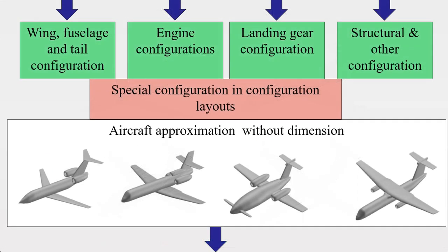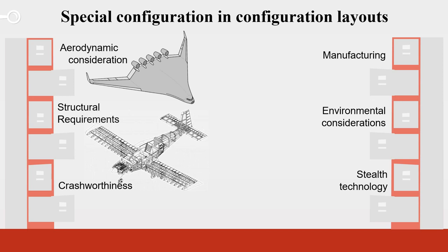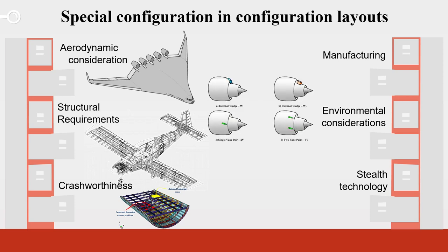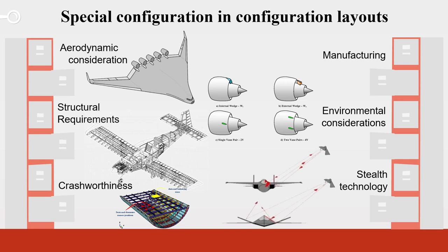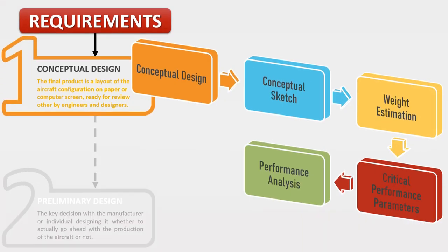Other special features in configuration layouts include aerodynamic considerations like blended wing body, structural considerations such as whether to use semi-monocoque or monocoque structures, crashworthiness, manufacturability, and environmental considerations like noise reduction and emissions. Additional considerations for military airplanes include radar detectability, infrared detectability, and stealth technology. Finally, the layout is drawn on paper and in CAD software based on this configuration.